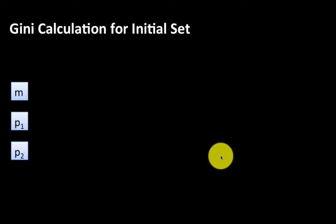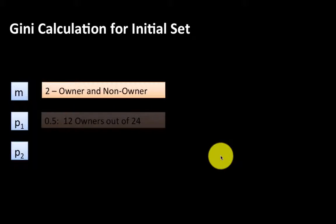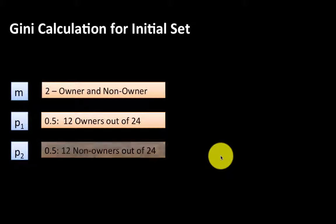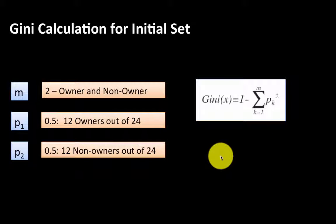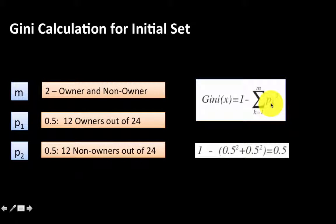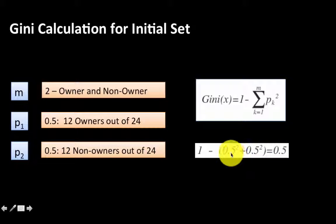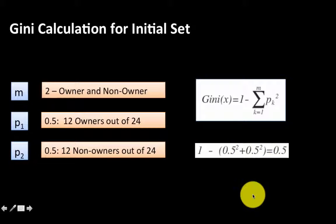Let's calculate the Gini index for this example. We have two classes — owners and non-owners. p1 is 0.5 because there are 12 owners out of 24; p2 is also 0.5 with 12 non-owners out of 24. Applying the formula: 1 minus (0.5 squared plus 0.5 squared) = 1 minus (0.25 + 0.25) = 1 minus 0.5 = 0.5. So in this case the Gini index is 0.5.